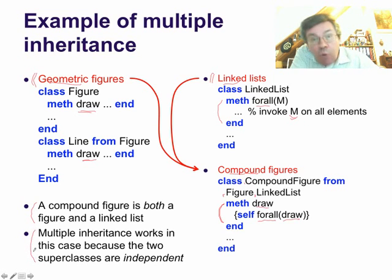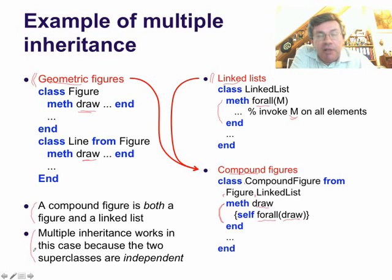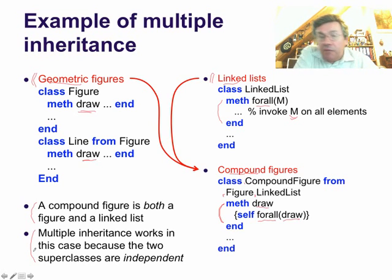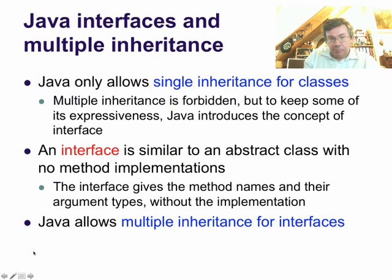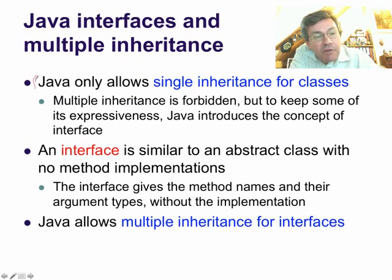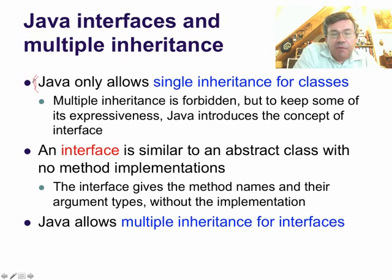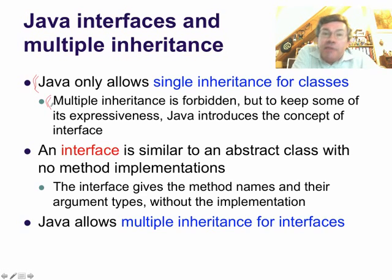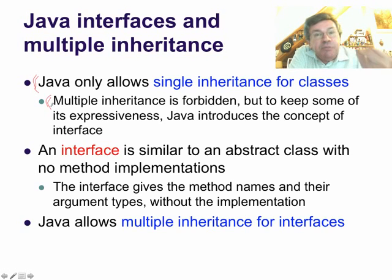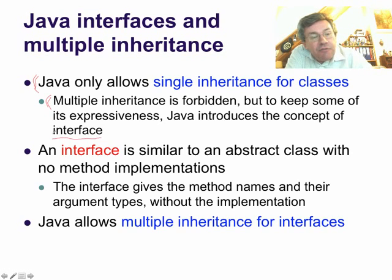So a compound figure is both a figure and a linked list. Multiple inheritance works in this example because the two superclasses — geometric figures and linked lists — are independent. Now, Java only allows single inheritance for classes. In fact, it forbids multiple inheritance for classes, but as we saw, it can be expressive to have multiple inheritance. So to keep some of that expressiveness, Java introduces a concept called an interface.